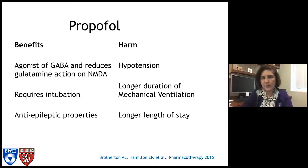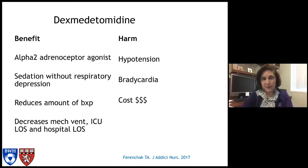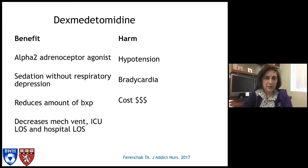Other medications used in the ICU for alcohol withdrawal include propofol, which also works on GABA and NMDA receptors. Patients on propofol require intubation, so there is associated morbidity. Propofol has some anti-epileptic properties, but side effects include hypotension and longer-duration mechanical ventilation, which often leads to longer length of stay. Dexmedetomidine is also used very commonly now for alcohol withdrawal. It is an alpha-2 adrenal receptor agonist that treats cardiovascular symptoms and can be used in non-intubated patients because it doesn't have respiratory depressive side effects. It reduces benzodiazepine use, mechanical ventilation days, and hospital length of stay, but can cause hypotension and bradycardia, and remains costly and not on formulary in many places.